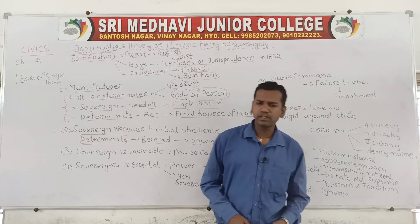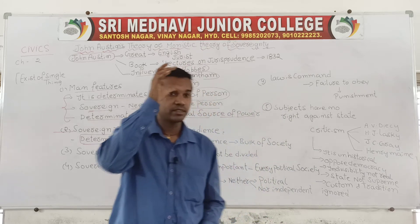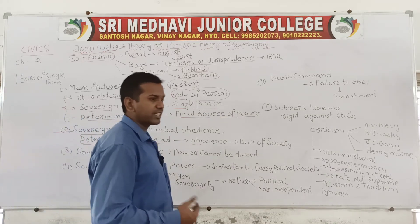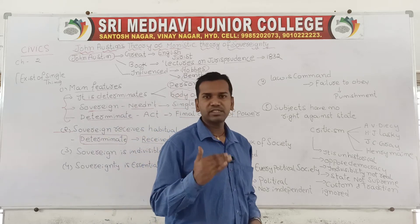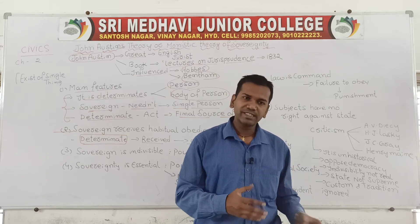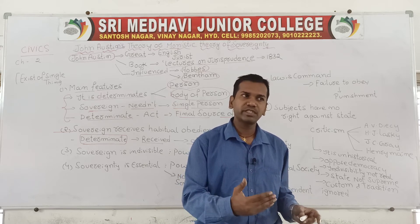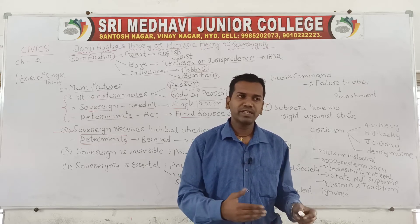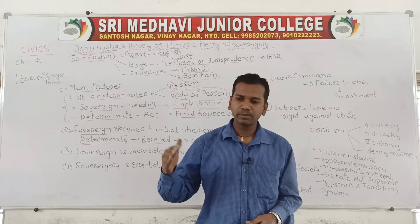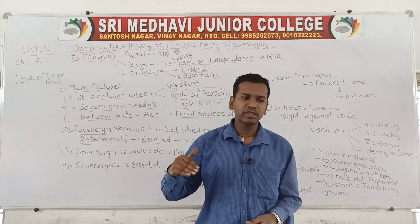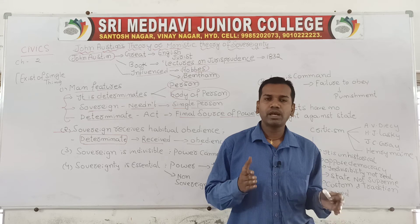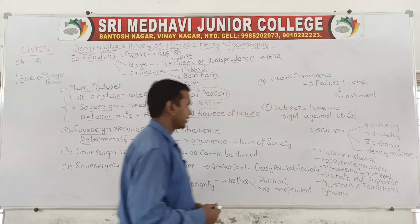Society, the bulk of society, should respect the determinate — the final authority. Taking an example: when talking about the state, most sovereignty is vested in the control of the state, so the bulk of society should respect the state. Since the state cannot directly exercise all sovereignty, the government exercises all power on behalf of the state, and society should also respect the government. Whoever the final authority is — the determinate — will get habitual obedience from the bulk of society.